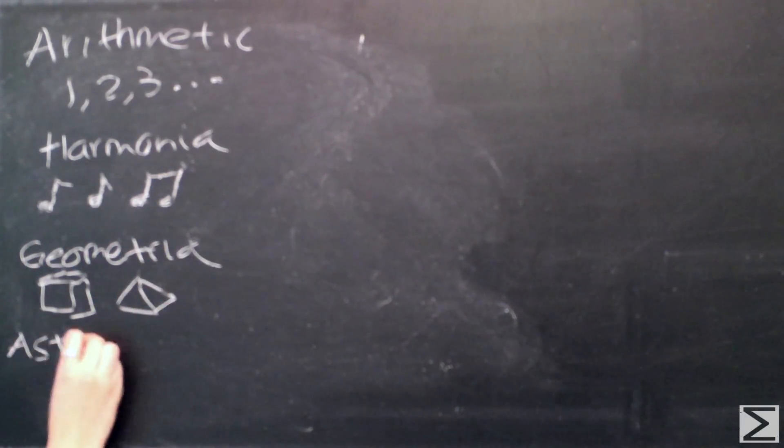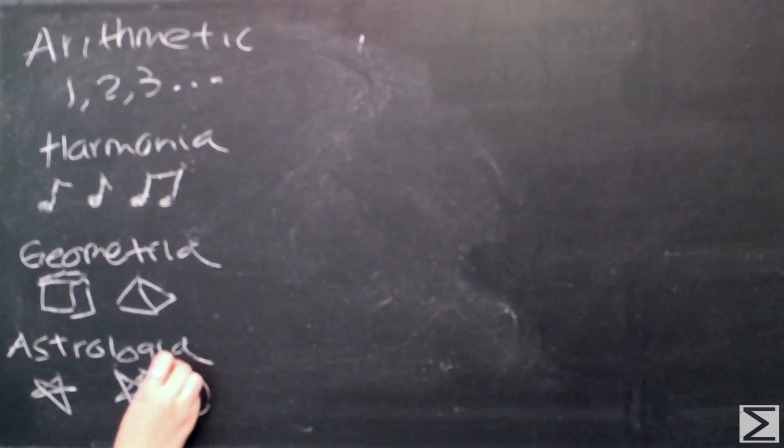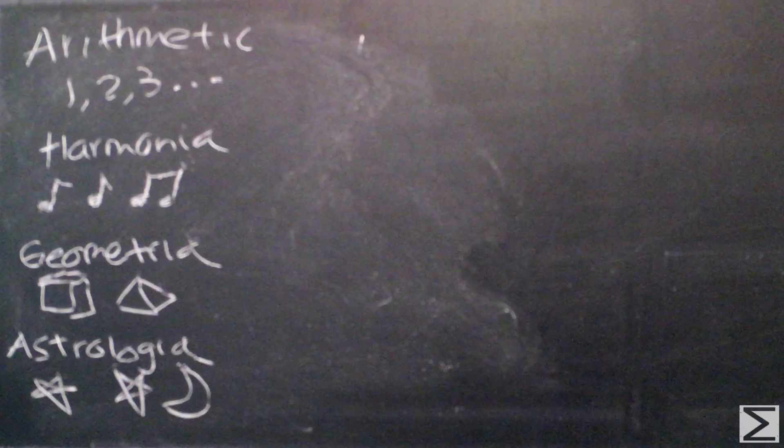They focused on four areas of study: arithmetic in the sense of number theory, harmonia or music, geometria or geometry, and astrologia or astronomy.